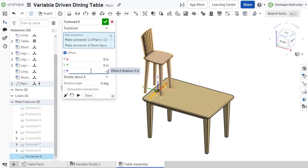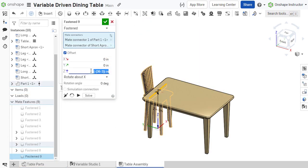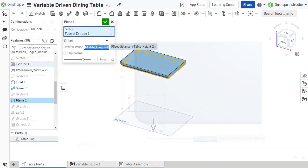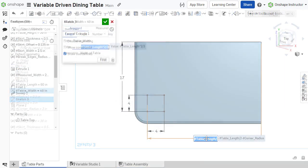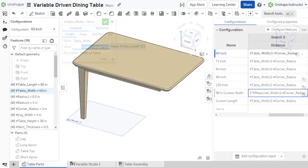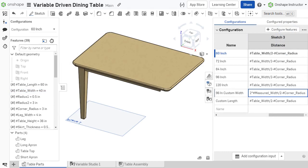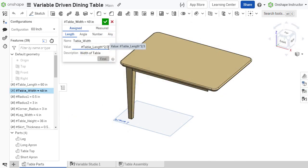Expressions can be used in both part studios and assemblies. Feature parameters, dimensions, variables, and configuration tables may all be defined with expressions. Expressions may also reference variables, and variables may contain expressions.